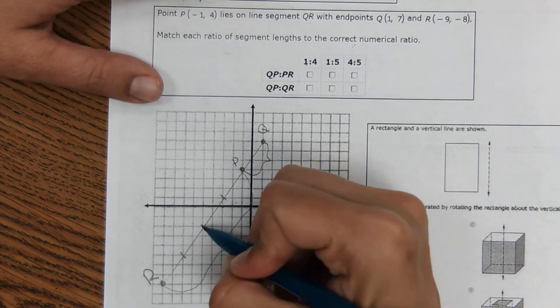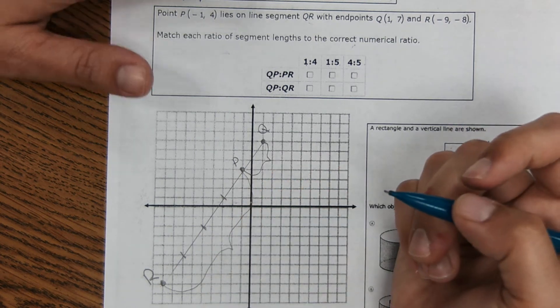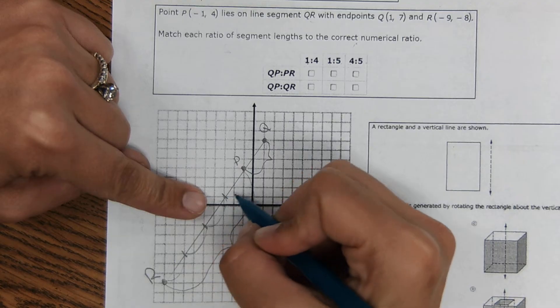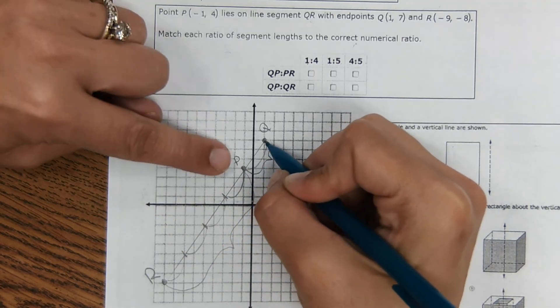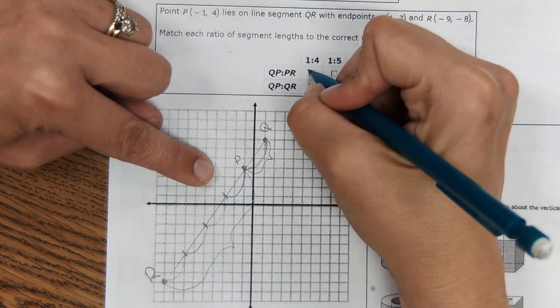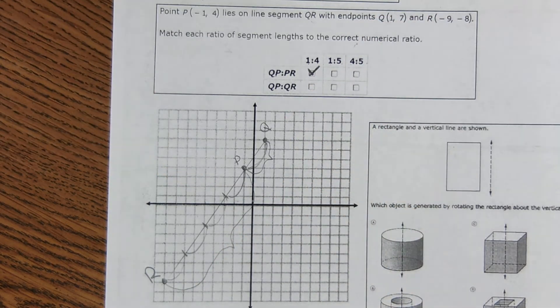You look where it perfectly intersects the other lines. Now you can see the parts. There's one part here, two, three, four, and then five. So QP, one part. PR would then be four parts. So this is the correct answer right here for that.